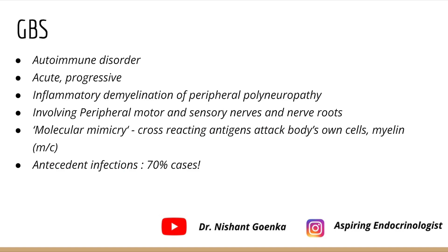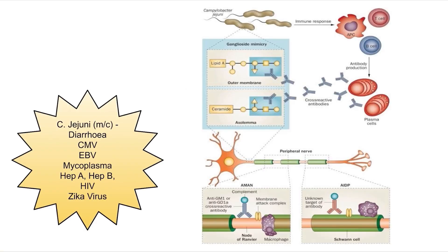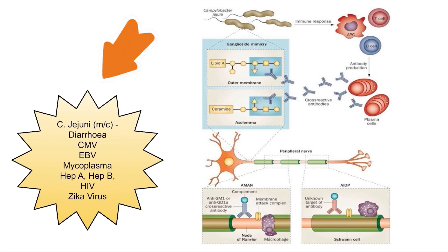The main mechanism behind GBS is molecular mimicry — cross-reacting antigens attack the body's own cells, with myelin being the most common target. In 70% of cases there is always an antecedent infection present before GBS sets in. Certain triggers include Campylobacter jejuni, most commonly associated with diarrhea, then cytomegalovirus, Epstein-Barr virus, Mycoplasma, Hepatitis A, Hepatitis B, HIV, and Zika virus.